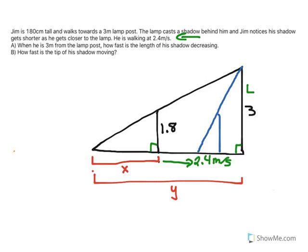So what we want to start to do is set up some of those ratios. I'm going to say the ratio of the heights, so 1.8 to 3, must equal x, the base of the small one, to the base of the big one, which I've labeled y.